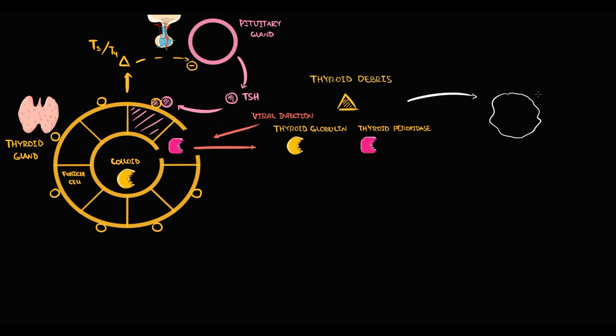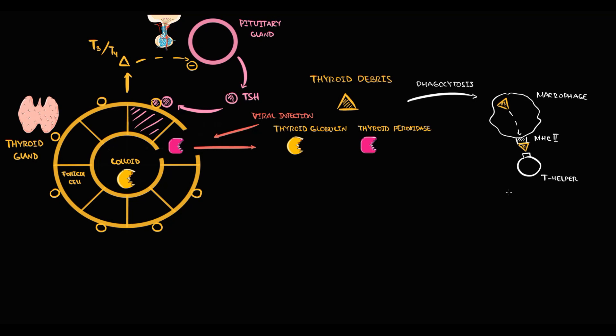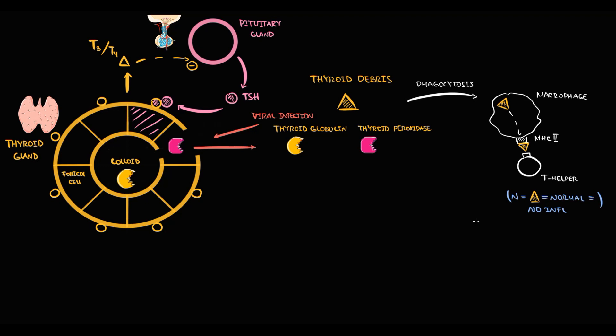Thyroid debris undergoes phagocytosis by macrophages, which present parts of the thyroid debris on MHC2 receptors to T-helpers. The logic is that antigen-presenting cells want to know: is thyroid debris normal material or something pathogenic? T-helpers scan the thyroid debris, and in normal conditions, they recognize it as a normal substance and do not trigger inflammation.